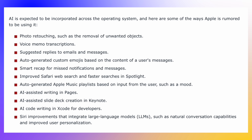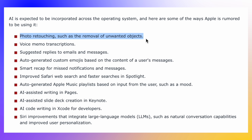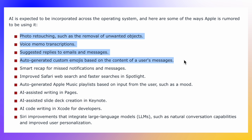We have a list of AI features here. We could be seeing photo retouching such as removal of unwanted subjects and even moving people around in a photo. Video memo transcription — translating your voice into text. Suggested replies to emails and messages, where AI suggests what to put in there. Also generated custom emojis based on the current content of a user's message, so an emoji can be custom-made based on what you're saying in your conversation.